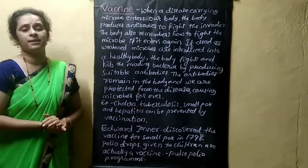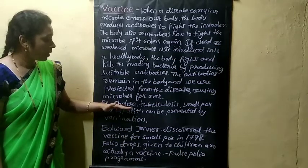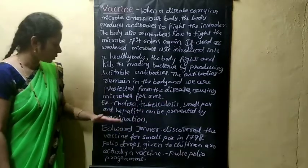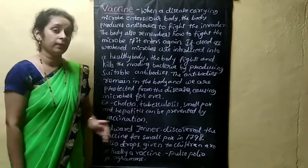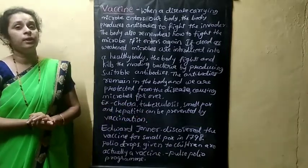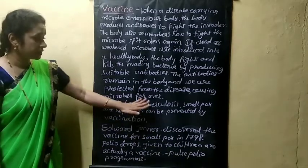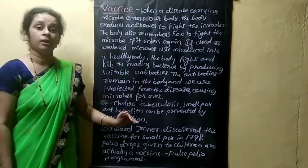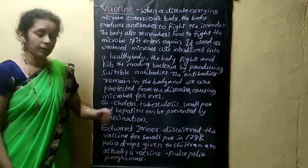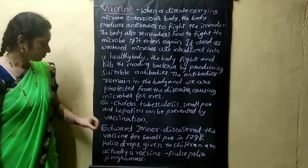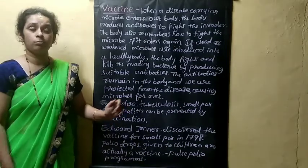Some examples of vaccines: diseases such as cholera, tuberculosis, smallpox, and hepatitis can be prevented by providing vaccines. These are the diseases that can be prevented by providing vaccines. A very good example is smallpox.